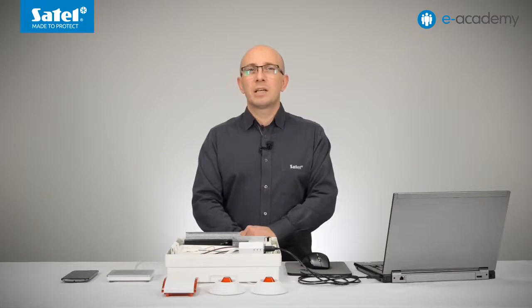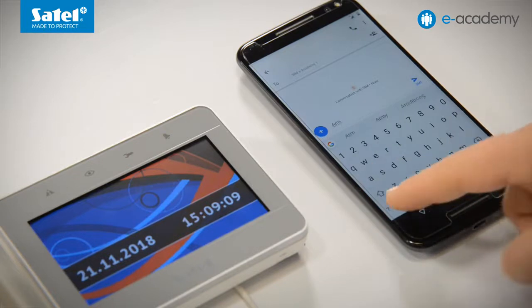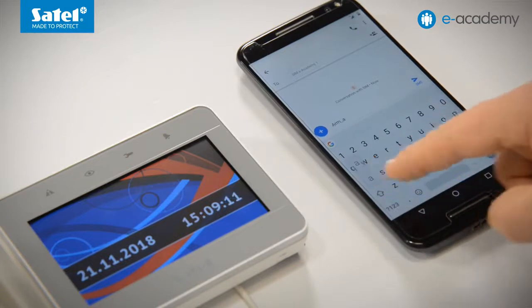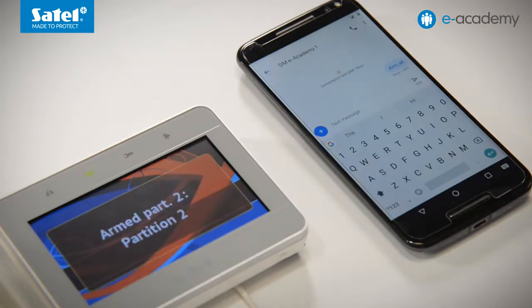Now I will proceed to check how configuration works in practice. First, I will send a message that will arm the system in all partitions. I am sending an SMS to the first SIM card number.